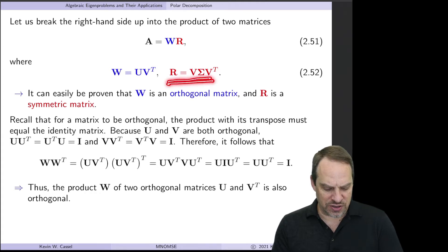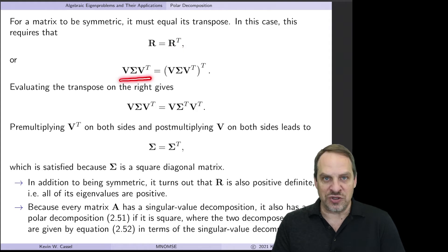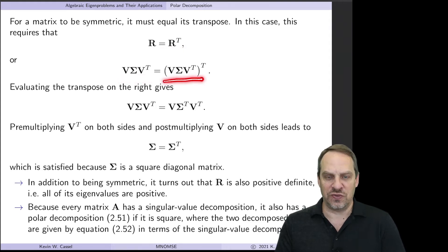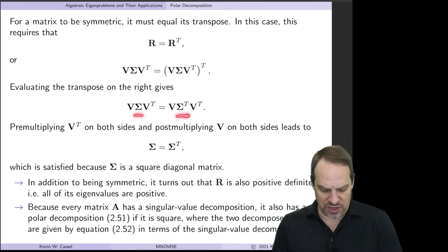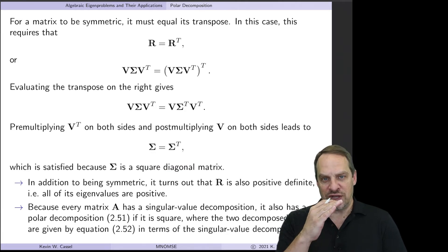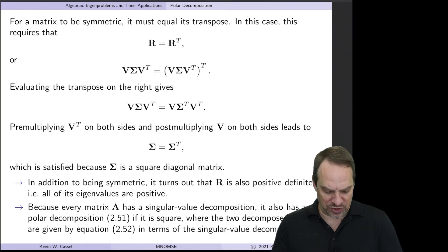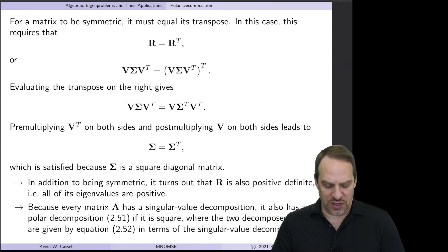Now let's show that R is a symmetric matrix. For it to be symmetric, R and R transpose have to be the same. R is defined as V sigma V transpose. Taking the transpose gives V transpose transpose times sigma transpose times V transpose, which is V sigma transpose V transpose. For these to be equal, sigma and sigma transpose must be the same. Since sigma is a square diagonal matrix in the context of polar decomposition, it equals its transpose. Therefore R is indeed symmetric. So W is orthogonal and R is symmetric.